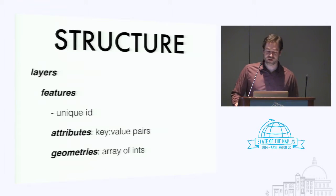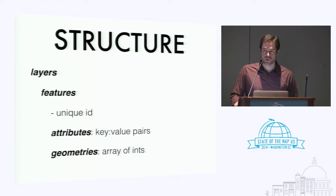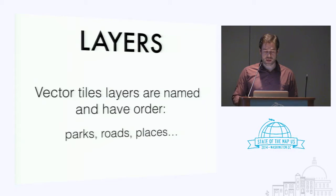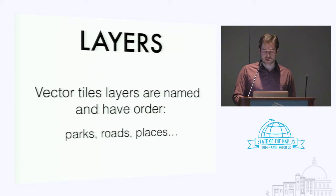The structure of a vector tile is pretty simple once you unpack the binary data. There's layers. Each layer has features. Features have attributes, geometries, and an ID. There can be more than one layer, and they're named and have order. So you could have a vector tile with just parks, or you could have a vector tile with parks, roads, and places, all inside.